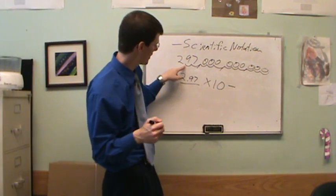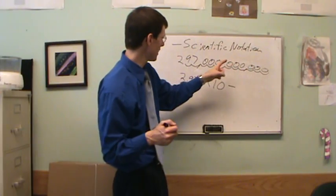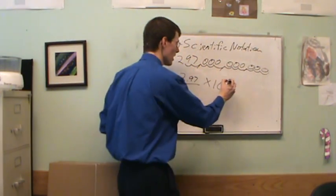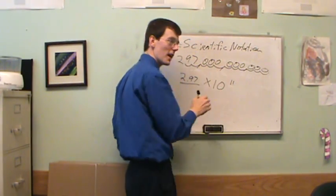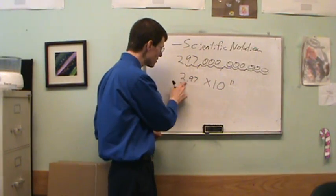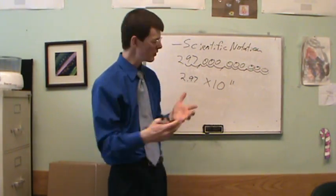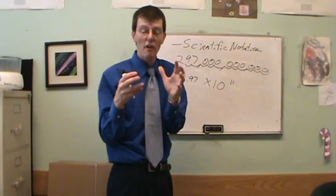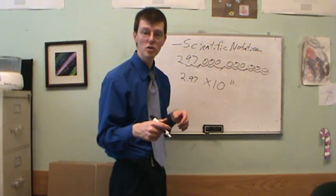So this is times 10 to the 11th. My number is 2.97 times 10 to the 11th. You can see it's a much more efficient way, a very good way of expressing a very large number.